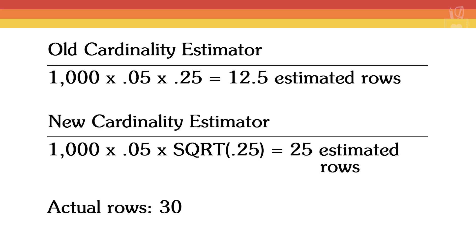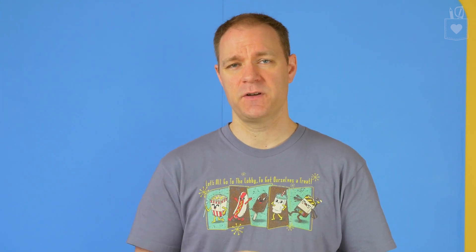The new cardinality estimator's math looks like this: 1,000 rows times the 5% chance they like Oscar Peterson, times the square root of the 25% chance they are jazz fans. So instead of 0.05 times 0.25, it's 0.05 times the square root of 0.25. Whenever you take the square root of a number between 0 and 1, you're raising the end result — this effectively doubled the estimate, which is actually much closer to the actual 30 rows. The cardinality estimator got a better estimate because it assumed those two predicates had something to do with each other.